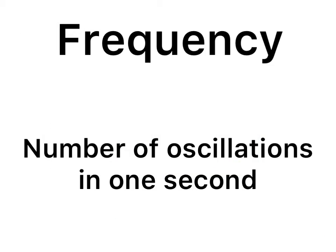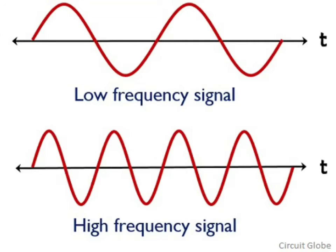Third characteristic of sound wave is frequency. Frequency is the number of oscillations per second. It is measured in hertz. The pitch or shrillness of a sound depends on the frequency of vibration. If the frequency of vibration is low, the sound produced has a low pitch. On the other hand, if the frequency of vibration is high, the sound produced has a high pitch.